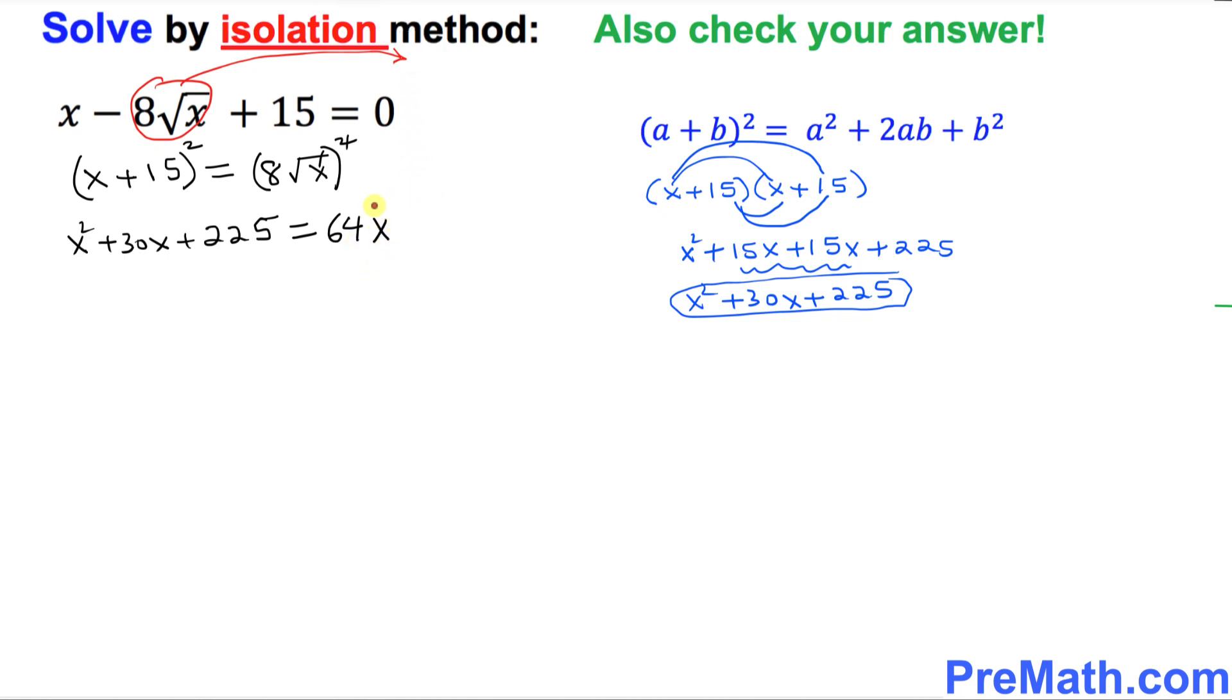I want you to move the 64x on the left-hand side. So once you move that one, x square plus 30x plus 225. And when you move this one on the other side, it becomes negative 64x equal to 0.